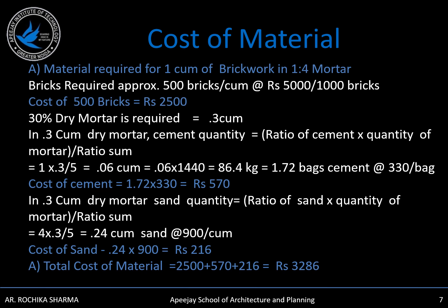The quantity of sand is 4 times the quantity of cement, so 4 × 0.06 = 0.24 cubic meters. At the rate of Rs. 900 per cubic meter, the cost of sand will be Rs. 216. Total cost of material: cost of bricks Rs. 2500, cost of cement Rs. 570, and cost of sand Rs. 216 — but noted as Rs. 260 in the table — giving a total cost of material of Rs. 3286.